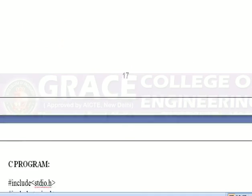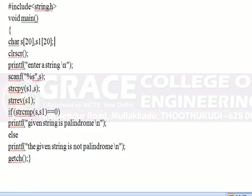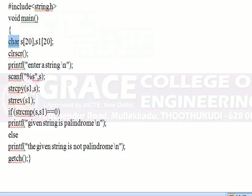Let us see the program. First, include the header files and main function. We are taking character data type, so we use character array variables: S of 20 and S1 of 20. Array always starts from 0, so we can store 0 to 19 elements inside S and S1. Then clear screen, then print: Enter the string. Since we have used character data type, in the scanf we use %S.